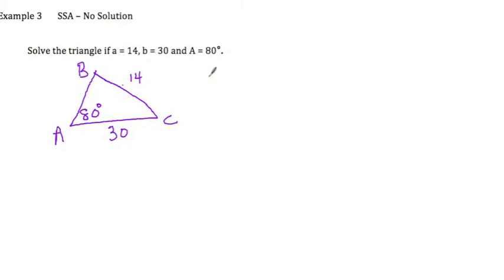So knowing what we know about the law of sine, let's use sine of angle A, which is 80, over side A, which is 14. The other side we know is side B, so let's say sine of angle B over side B.